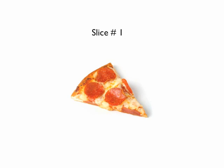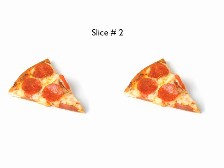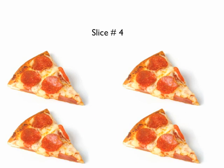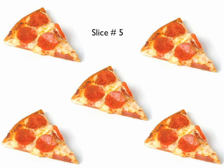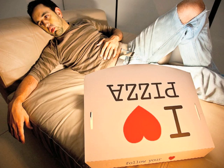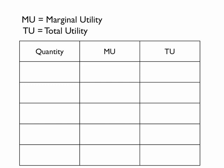How much additional satisfaction is gained after the consumption of the first, second, third, fourth, and fifth slices of pizza? You may love pizza so much that you may continue to consume it when your total utility has reached its peak. If so, you will actually take away from your total utility, satisfaction, and happiness. In this example, we are going to chart marginal utility and total utility with pizza consumption.